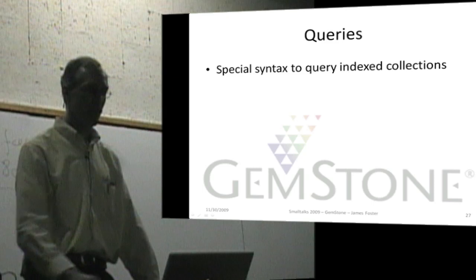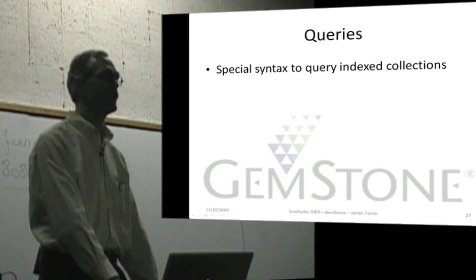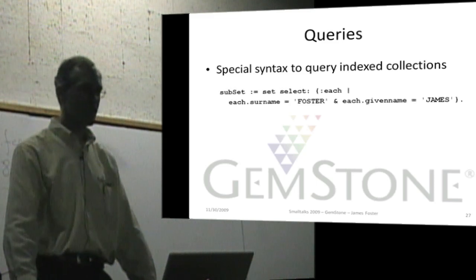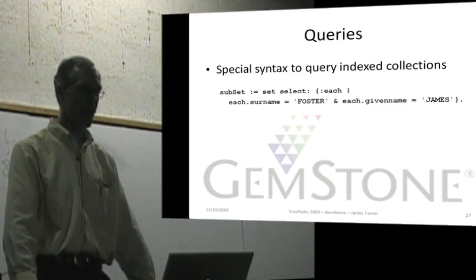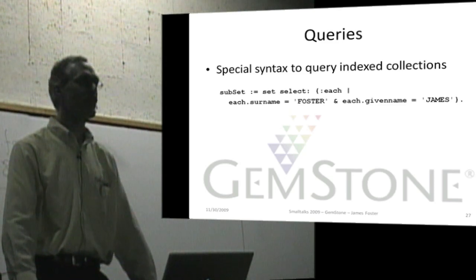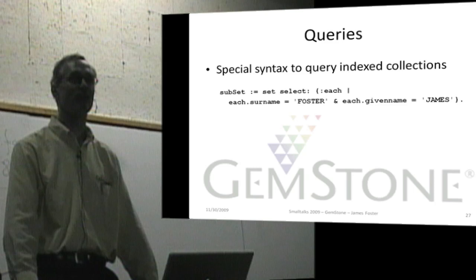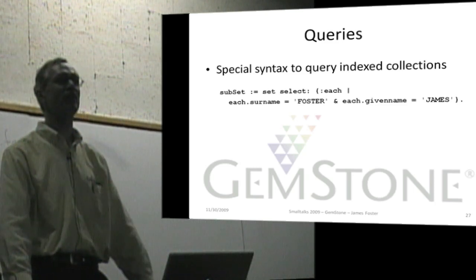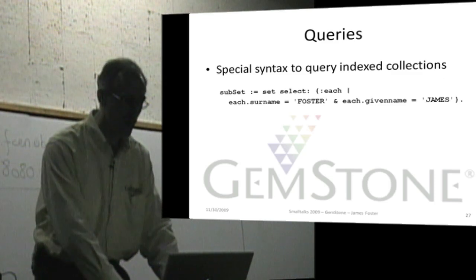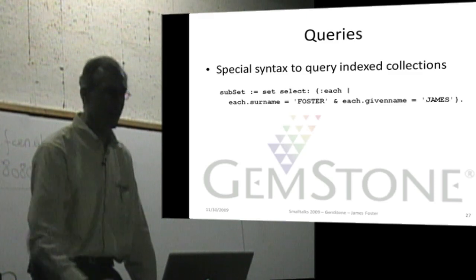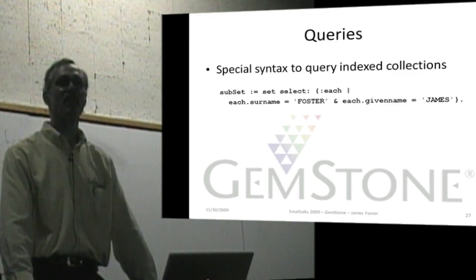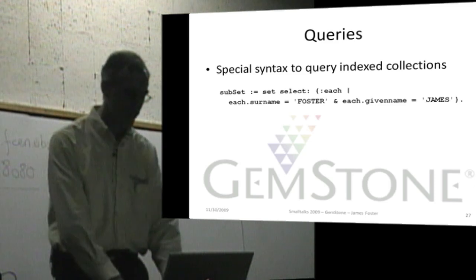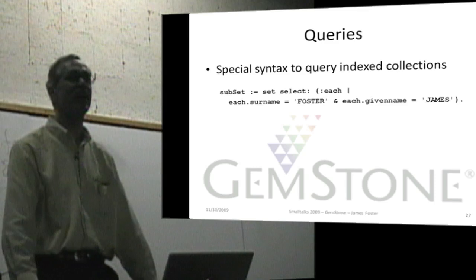Indexes need querying capabilities. In GemStone there's a special syntax in addition to some message-sending protocols. For example, of a large set you can say: select from each where each surname is 'Foster' and each given name is 'James'. This will very quickly return just the items in the larger collection that meet this criteria. The curly braces syntax is used for queries over indexed collections in GemStone, and the dot notation is a reference to instance variables — this is a special way of querying in GemStone.